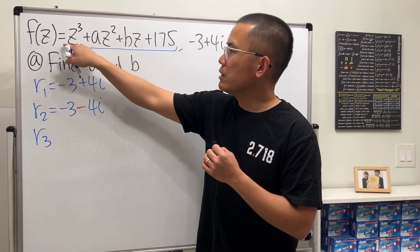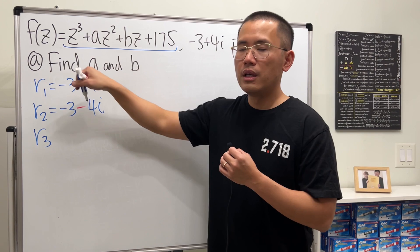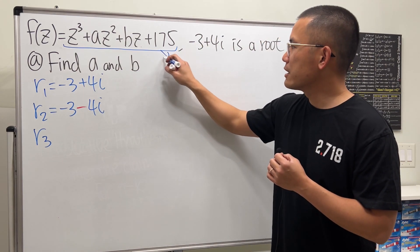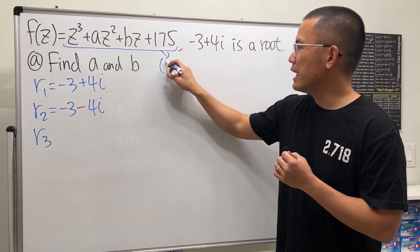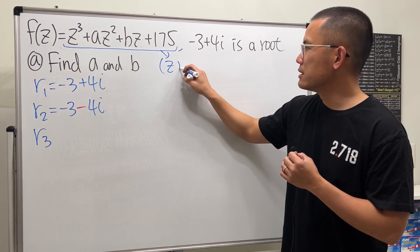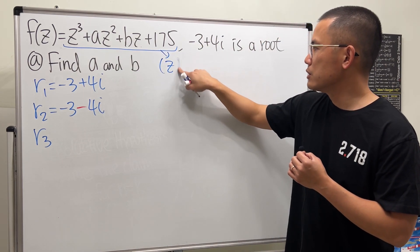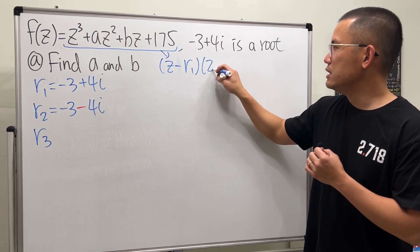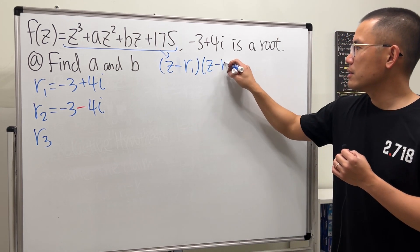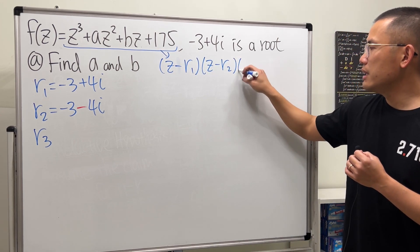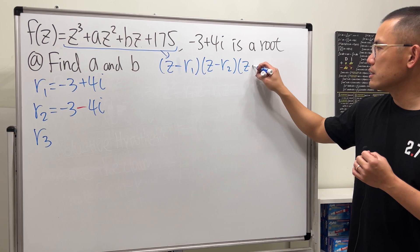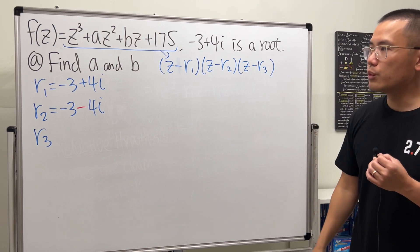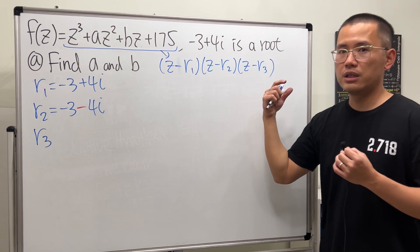Since the leading coefficient is one, I'm going to factor it and we must get (z minus r1) times (z minus r2) times (z minus r3). We can factor it this way and get 1 out front because we have z to the third power at the start.